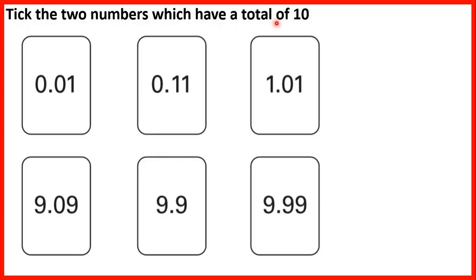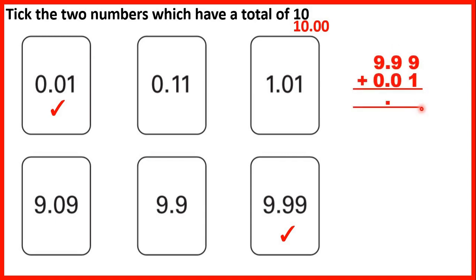Tick the two numbers which have a total of 10. Here we have decimal numbers, but we can write a decimal point and then zeros on the end of a whole number, so we can think of 10 as being 10.00. That makes it easier to see that the numbers we need are 0.01 and 9.99. We know that 999 plus 1 is 1000, so 9.99 plus 0.01 will be 10.00, which is the same as 10. And to check we could use column addition.